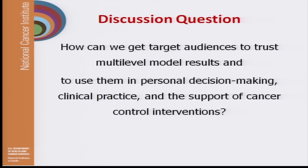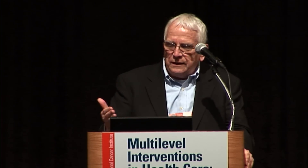The question we ended up with is: you can build complex multi-level models — that's readily easy to do. But can we really get anybody to believe them in terms of personal decision making, having patients deciding between alternative interventions, getting physicians in clinical practice to follow the implications of these models, and how do we use these models to try to gain the kind of national effort and support needed to support cancer control interventions? I think that's a big challenge. Thank you.